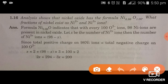Students, in this question, the analysis shows that nickel oxide has the formula Ni0.98O1.00. What fractions of nickel exist as Ni2+ and Ni3+ ions?